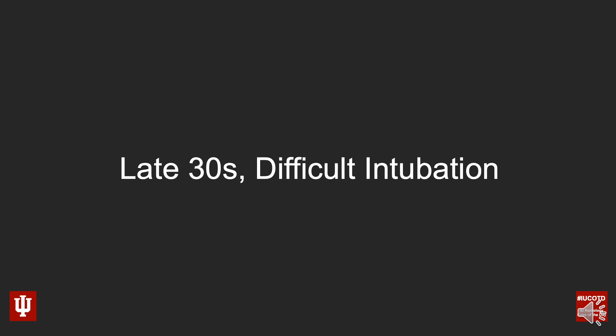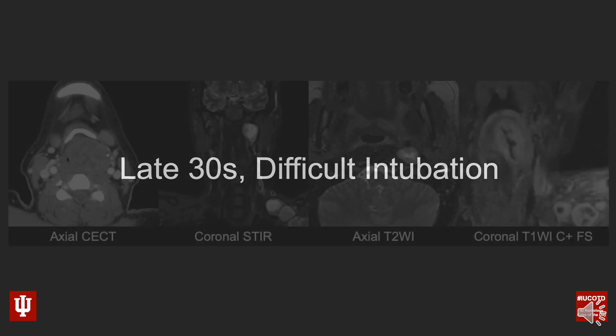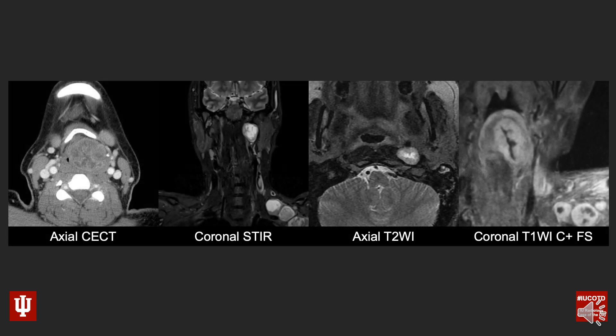This is a patient who was in her late 30s, and they found that she was very difficult to intubate whenever she was having an elective procedure done. I have four images for you to look at: an axial contrast-enhanced CT, a coronal STIR, an axial T2-weighted image at the level of the nasopharynx, and a magnified coronal T1 post-contrast fat-saturated image. There was no additional past medical history for this patient.